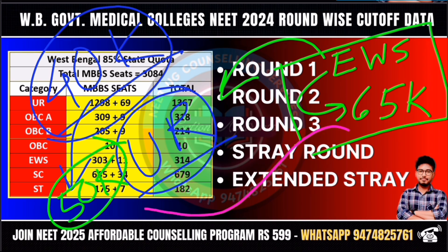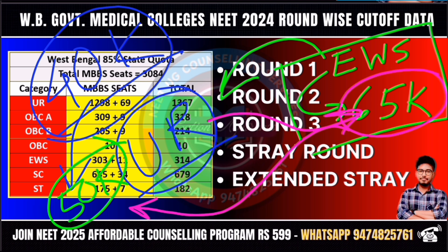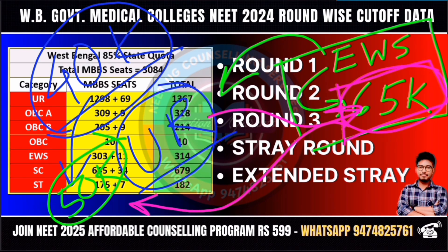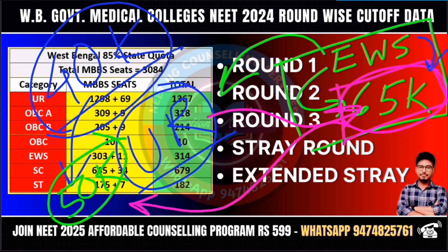But still, your rank is the same — you are a general category candidate for government medical college. As a general category candidate with 65,000 rank, your options are private medical colleges and semi-government MBBS. But if you are an EWS category candidate in counseling, you can secure government MBBS 100%.